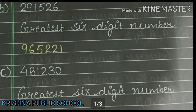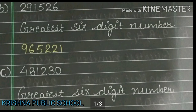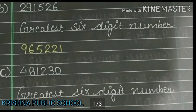We arrange in descending order, greatest to smallest. The greatest digit is 9, then 6, then 5, then 2, then 2, and lastly 1. So the greatest number formed is 9,65,221. This is my answer.